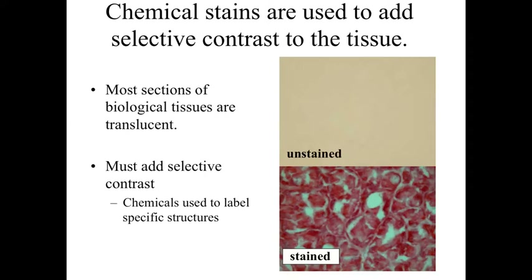Once we collect our sections — our slices of tissue — we need to be able to study them. Most biological tissues are translucent, which means if we project light through them, we're not going to see anything; the light just passes through. So what we want to do is add selective contrast using chemicals that bind to specific structures and characteristics within our biological tissues, and then look at where those chemicals have added color.